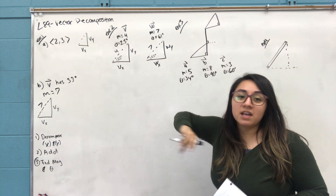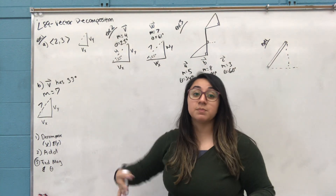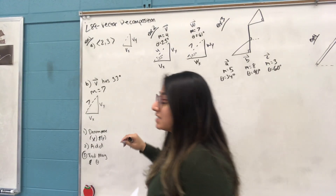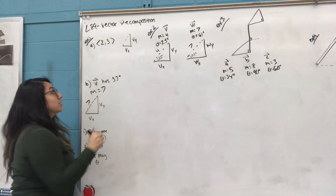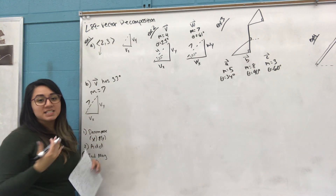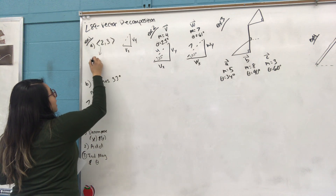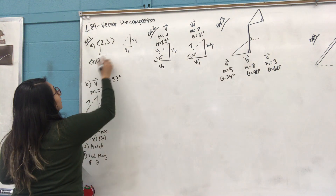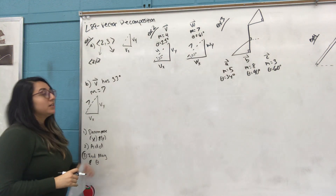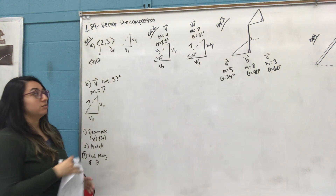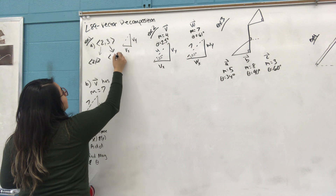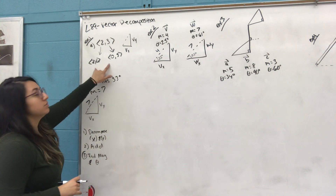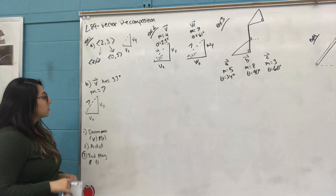In vector decomposition, we think of decomposing as separating. Looking at Example 1, we're going to decompose this vector. We know this is a value of 2 on the x-axis, so we separate it: x equals 2 and y equals 0. For the y-component of 3, we write y equals 3 and x equals 0. That's how we decompose it.